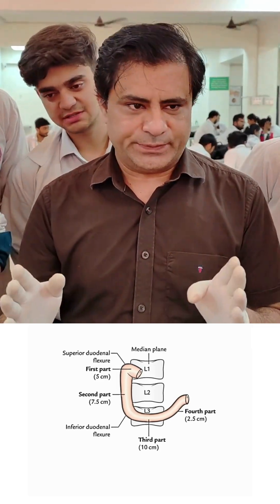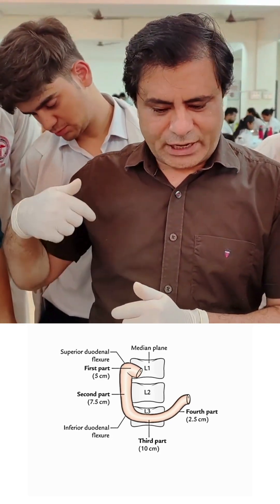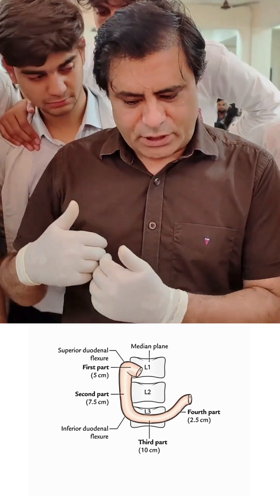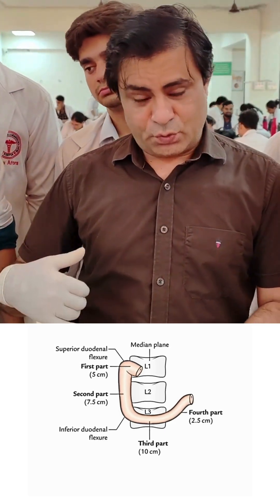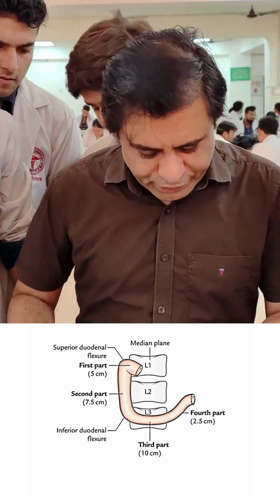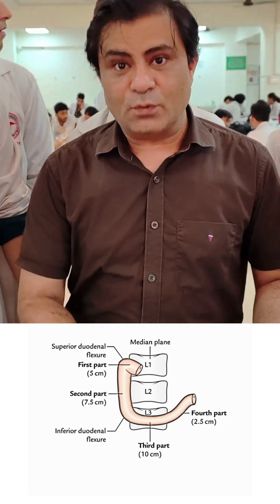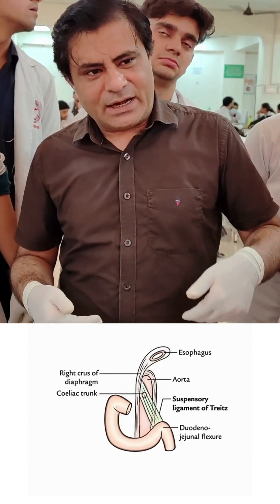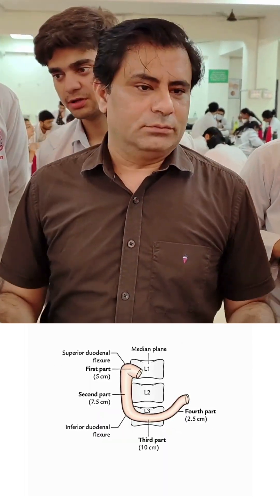Then there is a flexure and the second part descends down. The second part crosses L1, L2 and reaches opposite L3 vertebra, with a length of about 7.5 cm, which equals 3 inches. The third, horizontal portion crosses the spine from right to left in front of L3. It is horizontal but slightly elevated on the left side, and is the longest portion of the Duodenum at 10 cm, or 4 inches.